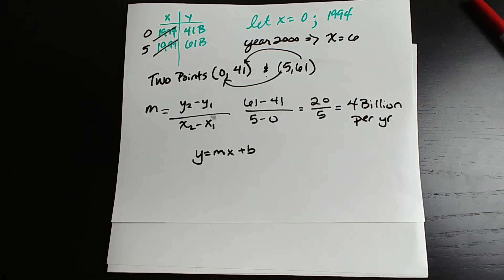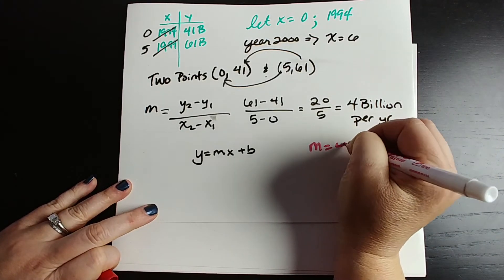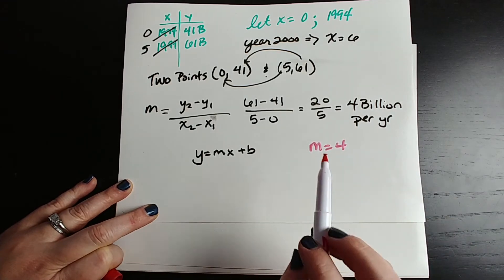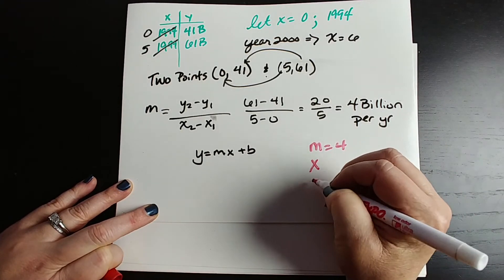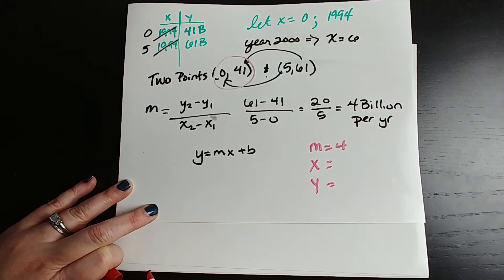So now what we're going to do, we have m. We have m equals 4. We have an x and a y. Actually, we have two x and y's, but we only need one at this point. We can ignore one of our points. So we need an x, we need a y. I'm always going to pick the point that has the easier numbers, and one of them is a zero, so that's the winner.